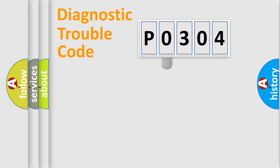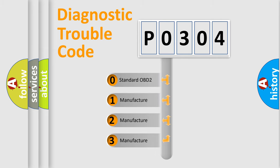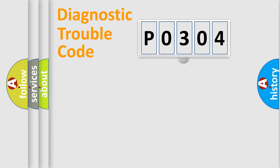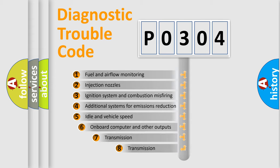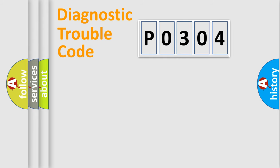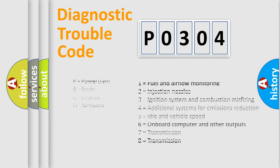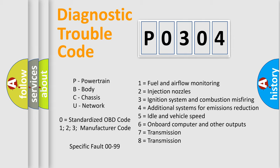This distribution is defined in the first character of the code. If the second character is expressed as zero, it is a standardized error. In the case of numbers 1, 2, or 3, it is a more specific car-manufacturer error. The third character specifies a subset of errors, and this distribution is valid only for the standardized DTC code. Only the last two characters define the specific fault of the group. This division is valid only when the second character is expressed by the number zero.